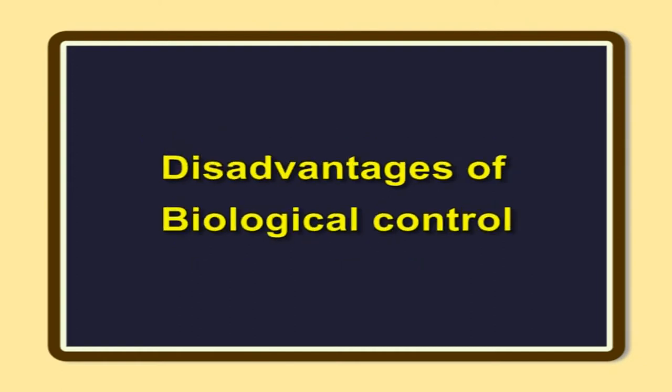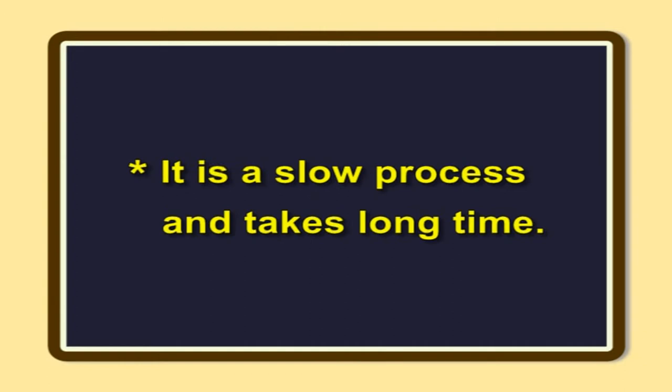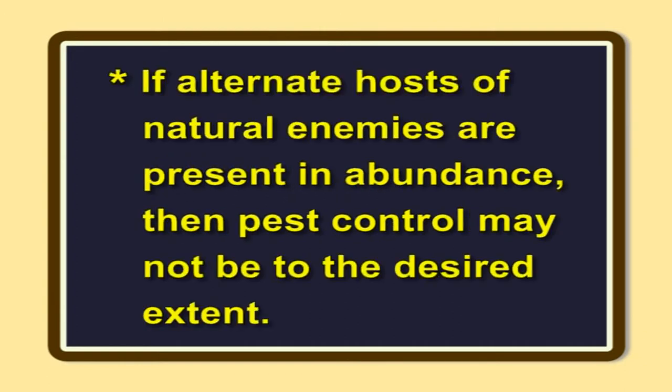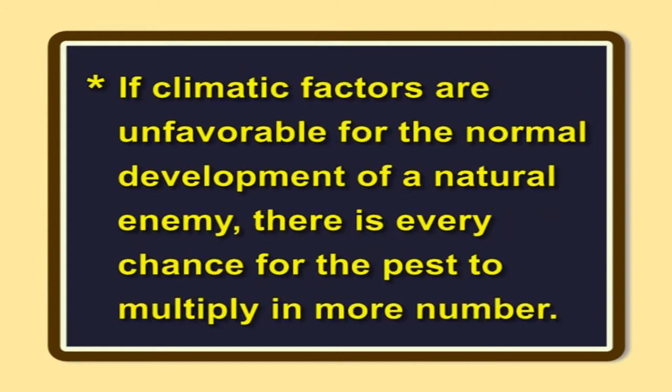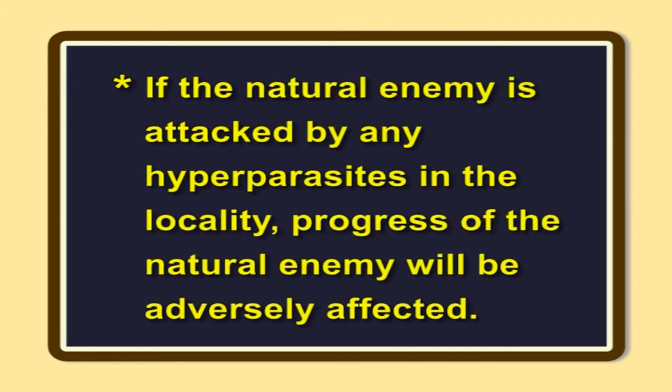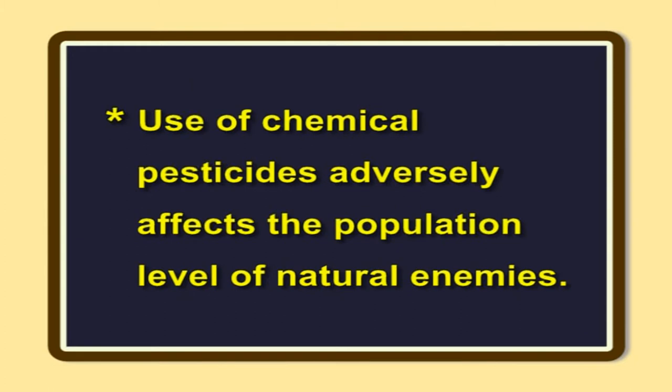Disadvantages of biological control. It is a slow process and takes a long time. If alternate hosts of natural enemies are present in abundance, pest control may not be to the desired extent. If climatic factors are unfavorable for the normal development of a natural enemy, there is every chance for the pest to multiply in greater numbers. If the natural enemy is attacked by any hyperparasites in the locality, progress of the natural enemy will be adversely affected. Use of chemical pesticides adversely affects the population level of natural enemies.